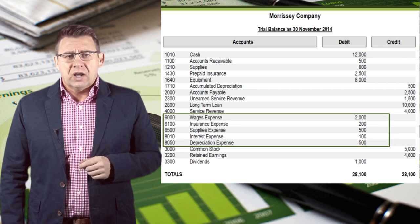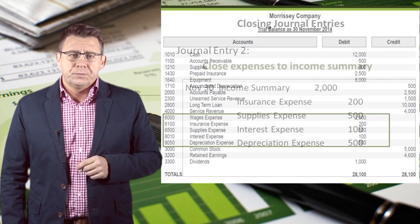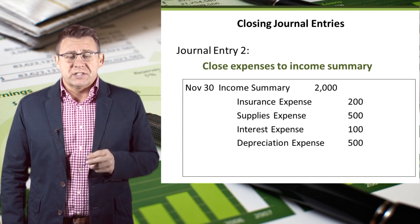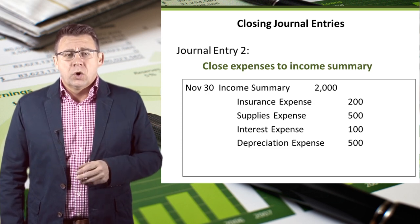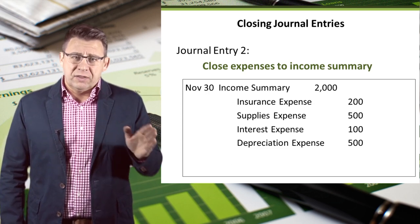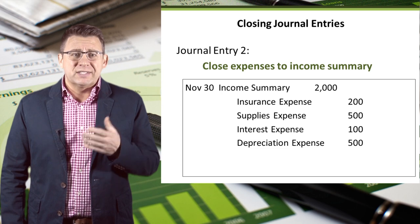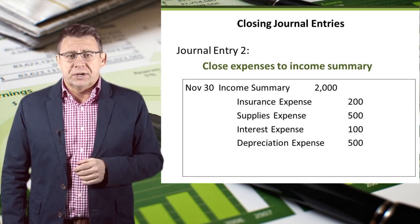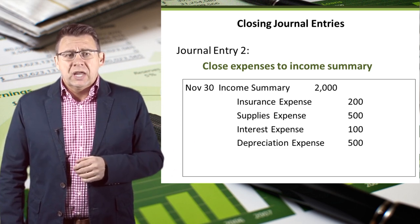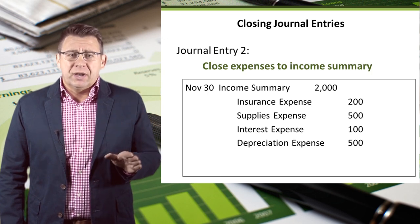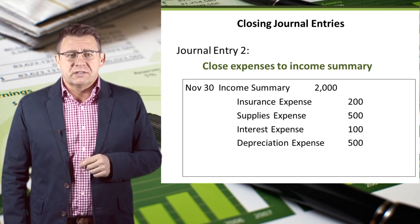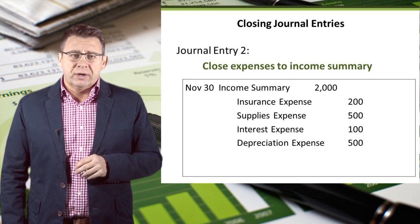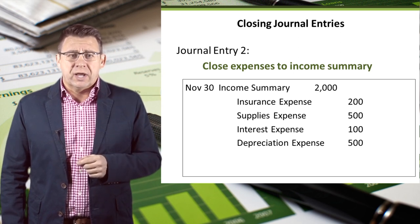Next, we'll close expenses. The second journal entry is to close expenses to income summary. We record our expenses separately in the journal entry because each account needs to be zeroed out, as you can see in the example. Income summary will then be debited for the total of all the expenses. After posting this journal entry, all of our expenses will be zeroed out.